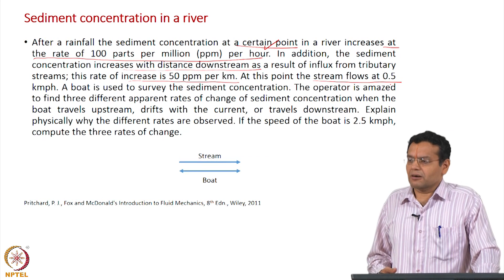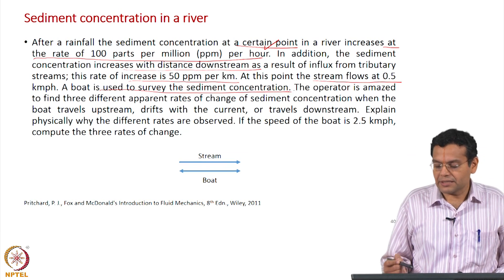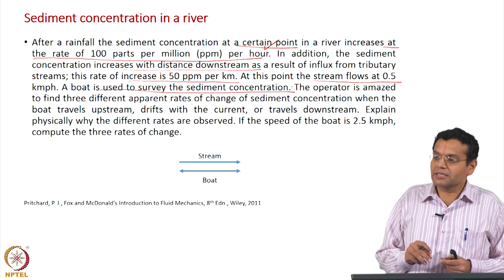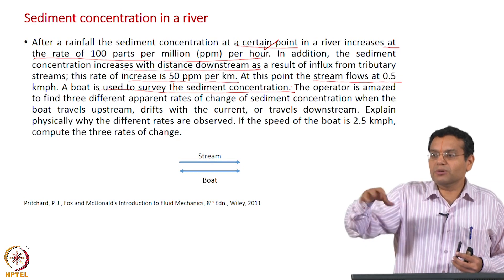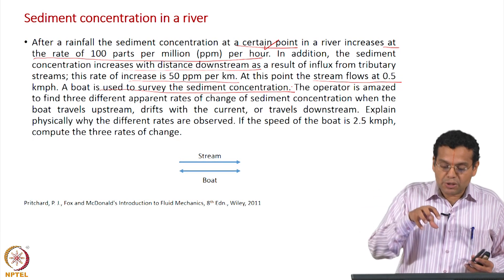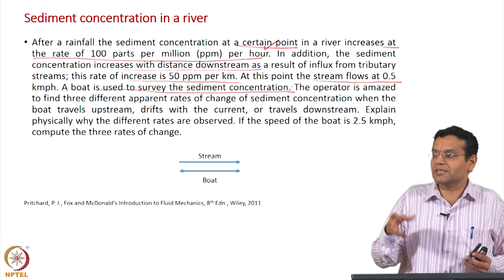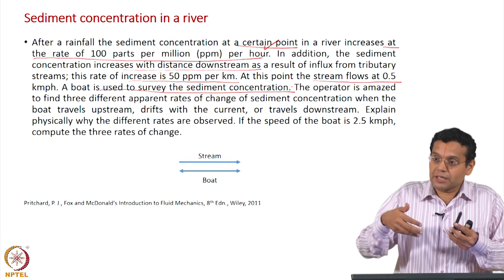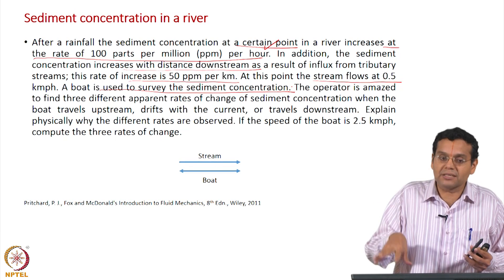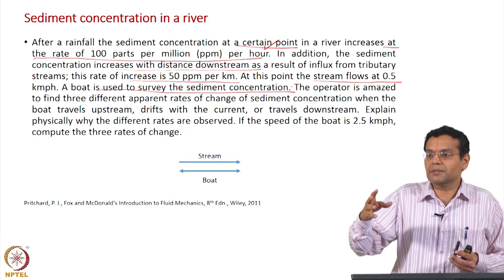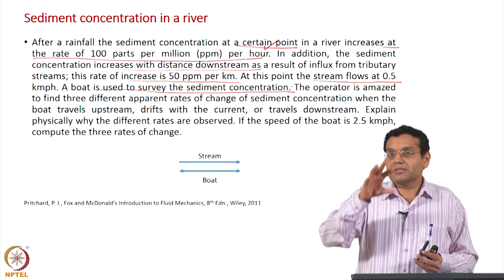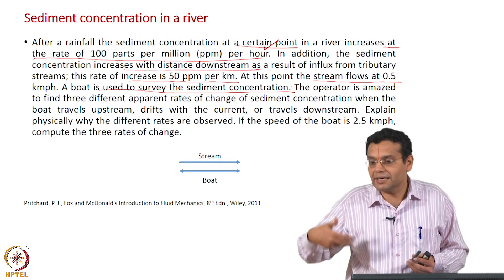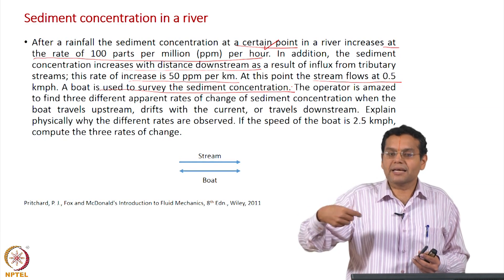A boat is used to survey the sediment concentration because you want to measure the surface concentration over the entire region. You cannot be at a particular point — that is the advantage of this Lagrangian way of measurement. You can move around and measure; otherwise you require a lot of sensors. If concentration is varying with respect to time, you require simultaneous sensors at several locations from the Eulerian viewpoint. With a Lagrangian approach, you can move around and measure, similar to traveling in a motorcycle to measure pollutant concentration.